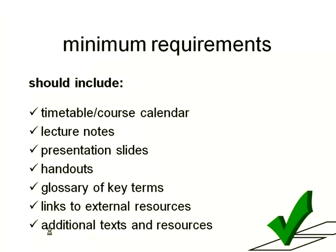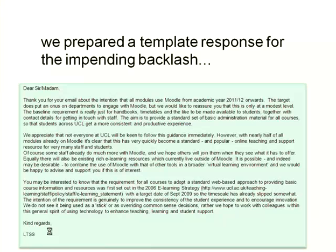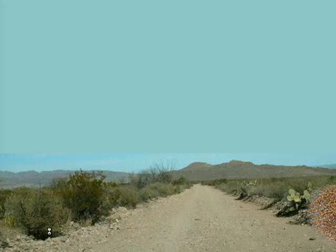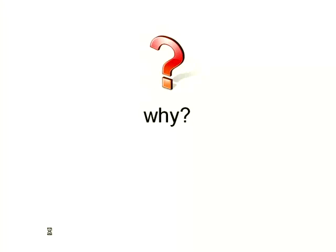We set up some more extensive requirements if you wanted to go beyond the baseline. We went to an academic committee and convinced them this should be done. In spring 2010, they agreed, and a staff email went out from the chair of the academic committee that all modules must have a Moodle presence at baseline level by September 2011. We prepared a template email because we expected a big backlash — and this is what actually happened. I'm going to hand over to Clive now, who's going to talk about why.